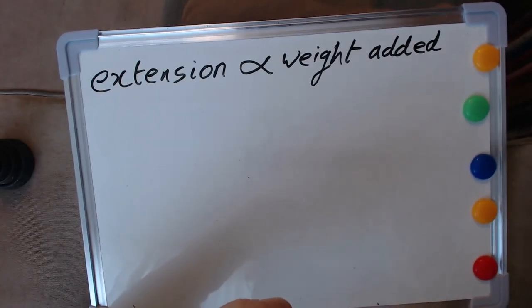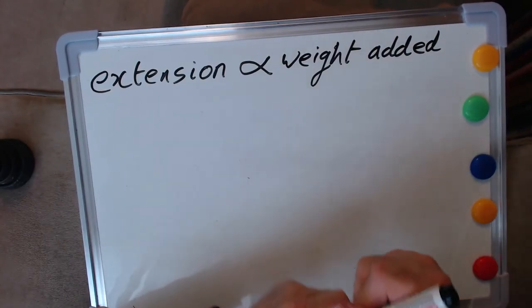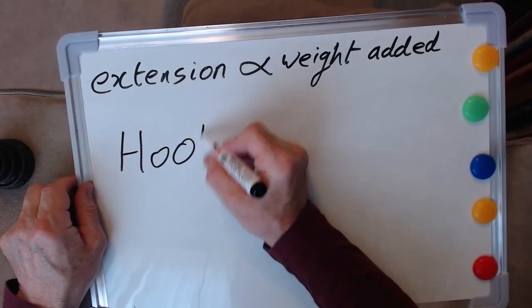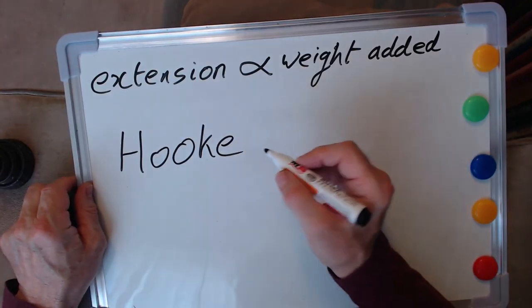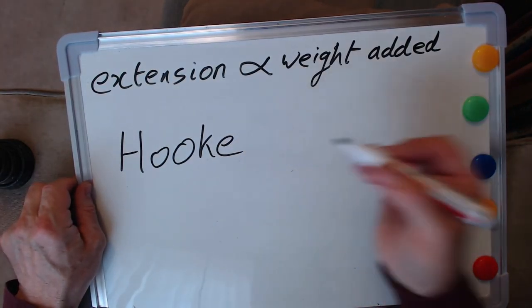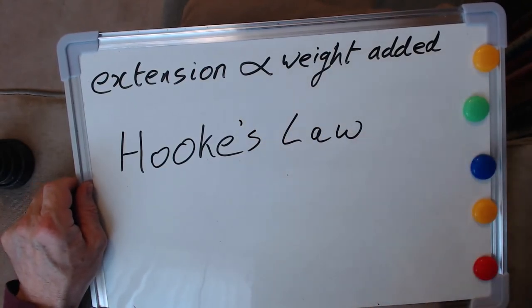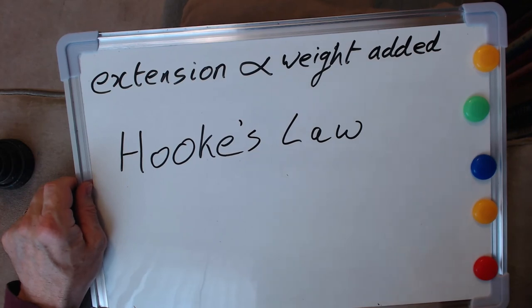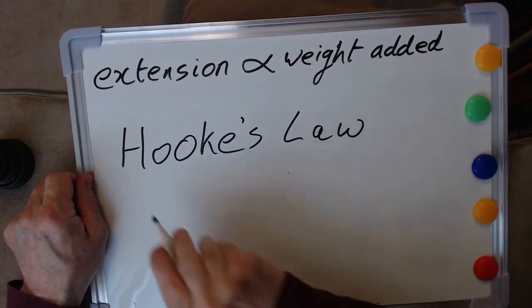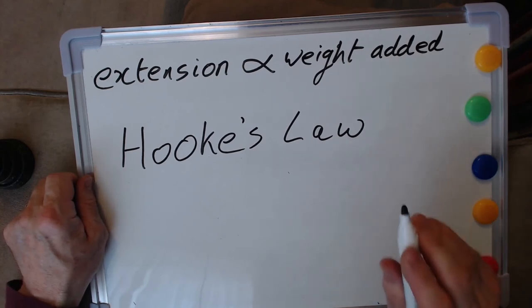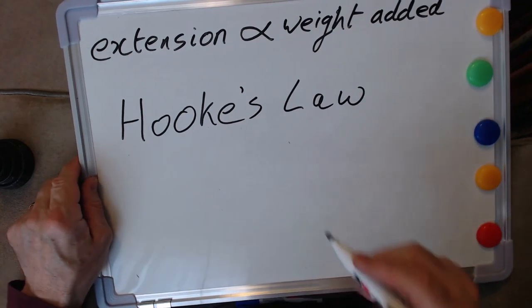It's the same sort of relationship and actually it explains the experiment we did earlier. If you want to look it up, this was actually an experiment performed by a really famous scientist, Robert Hooke. What we established with our elastic band has a name and the name is Hooke's Law. Hooke's Law is what we've demonstrated.